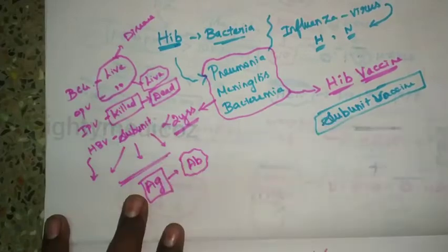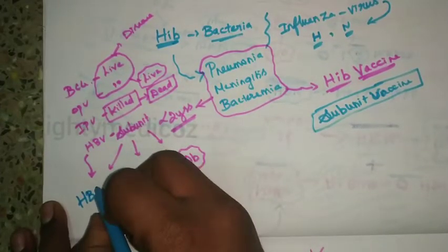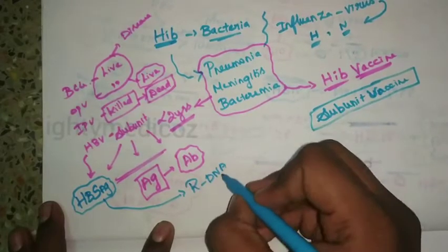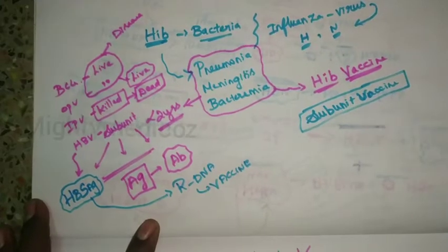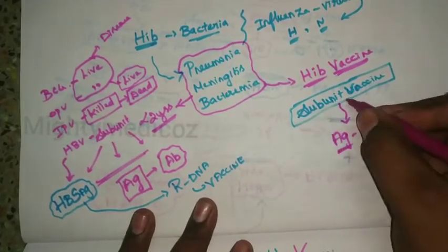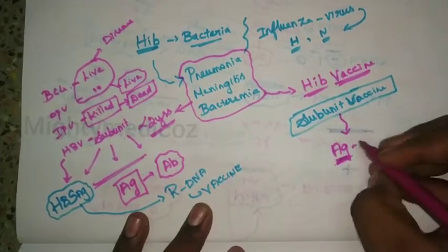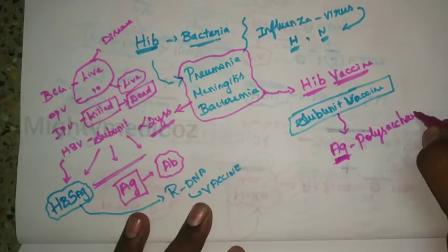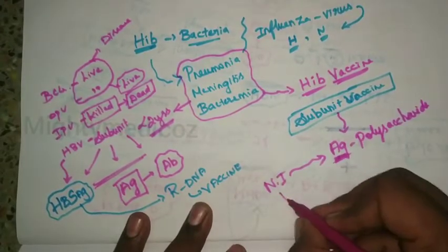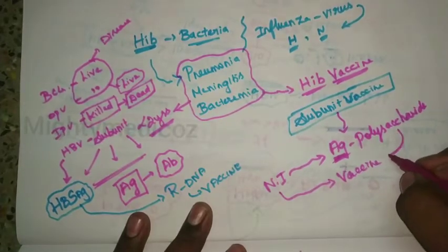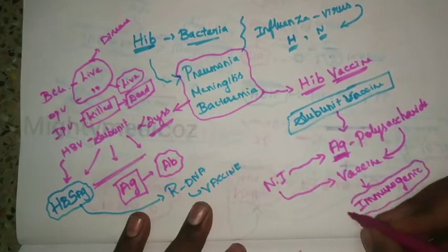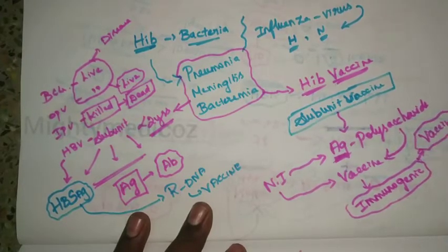The Hib vaccine is a subunit vaccine. For certain microorganisms, a surface antigen is used — similar to hepatitis B surface antigen — which causes immunogenicity in the body using recombinant DNA technology. In the Haemophilus Influenzae B vaccine, the antigen with immunogenic capacity is polysaccharide, found in the cell wall. This polysaccharide has both antigenic and immunogenic capacity, and this property is preserved in the vaccine.